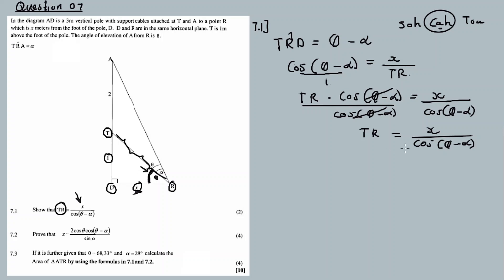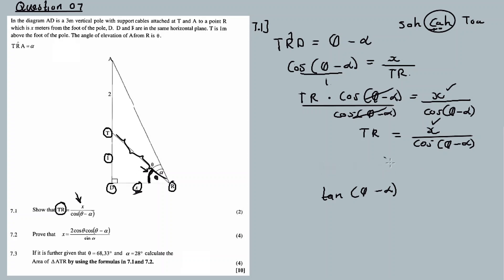So TR is equal to X over cos(θ minus α). Why use cosine and not sine or tan? Because TR involves the cosine function — the adjacent and hypotenuse. If it was sine, you'd use sine; if it was tan, you'd use tan. But since we have cosine and X, we use the cosine ratio here. Moving on to question 7.2.